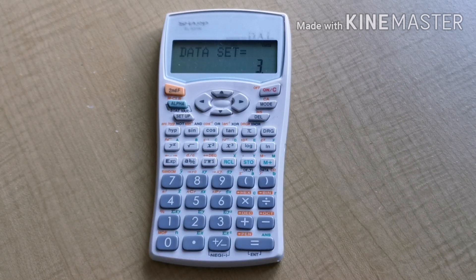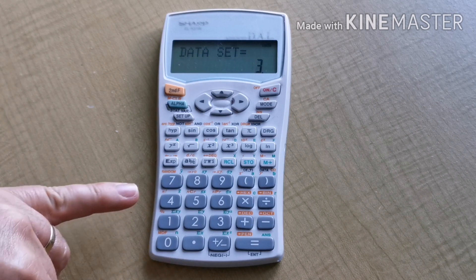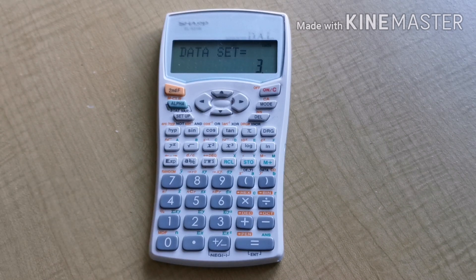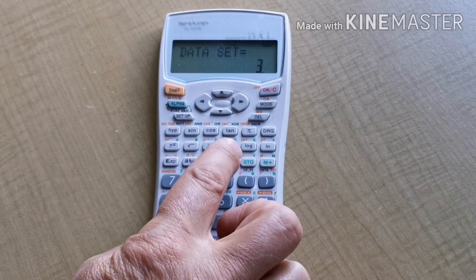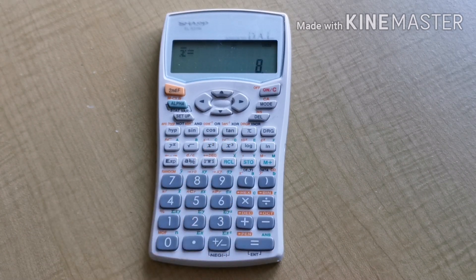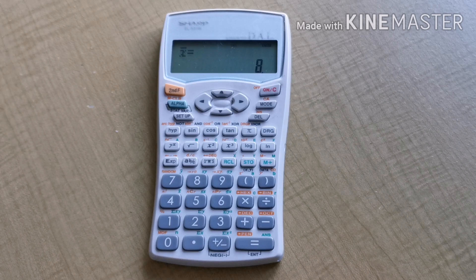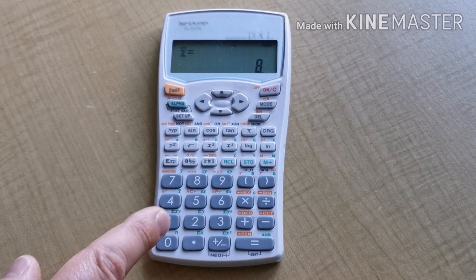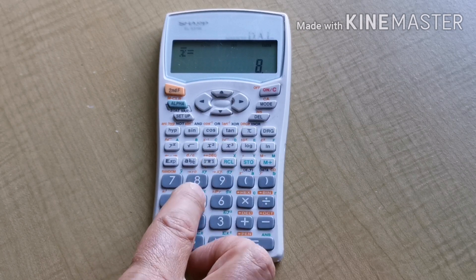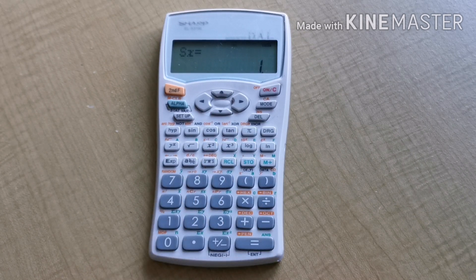Now I'd like to know the mean X bar. X bar the mean is written beside the 4 key in green print, so I press the green recall key and then 4. X bar equals 8 is the correct answer. Standard deviation S or SX is written in green beside the 5 key, so I press the green recall key followed by the 5 key which tells me the standard deviation equals 1.